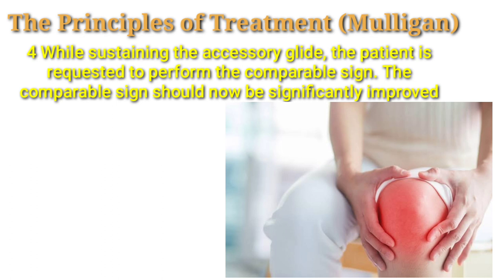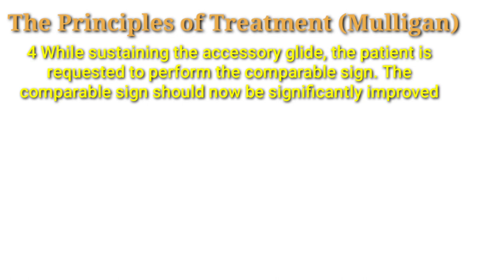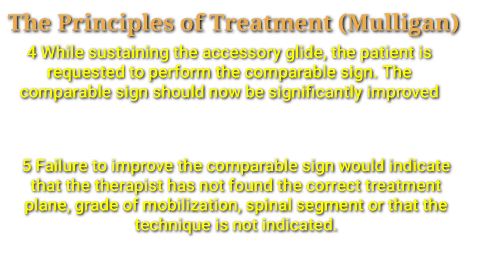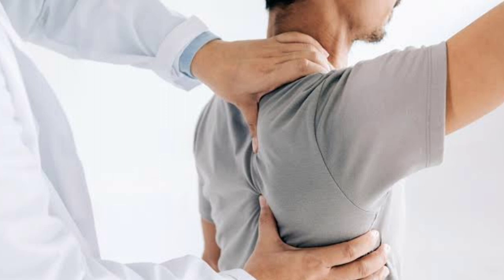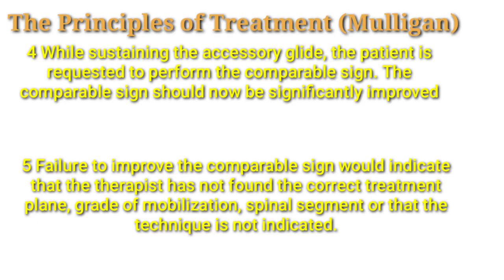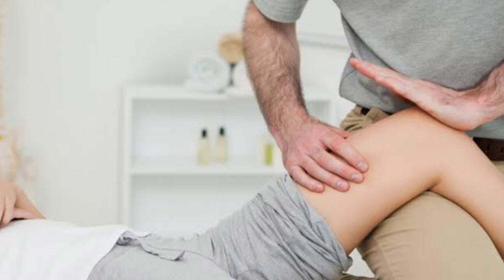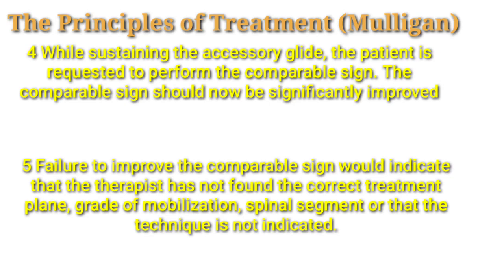Number five: failure to improve the comparable sign would indicate that the therapist has not found the correct treatment plan. This means that after applying the accessory glide, the comparable sign should be improved. If not improved, it means the therapist has not done a correct treatment plan, or the grade of mobilization was not applied, or the technique was not indicated.